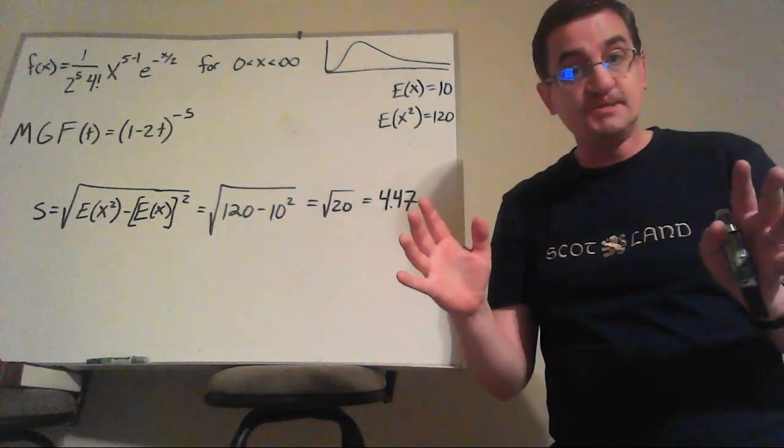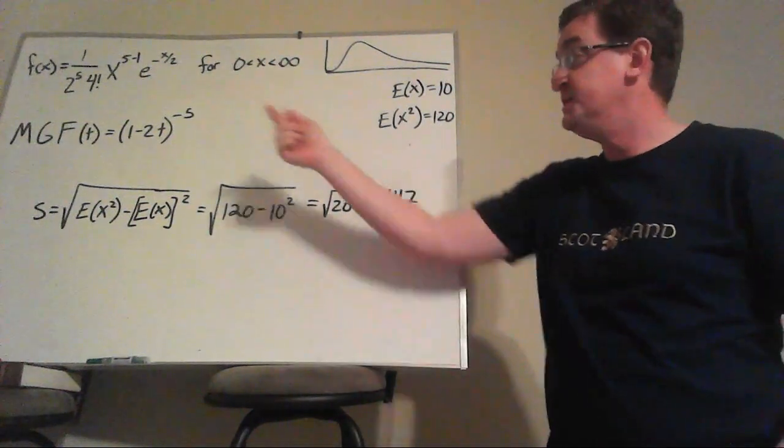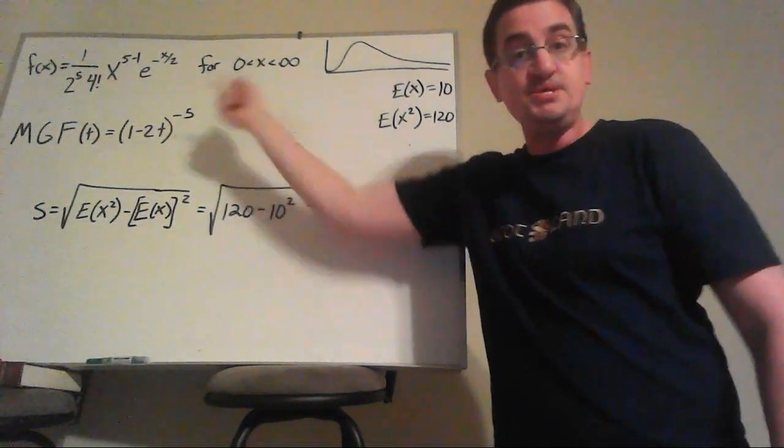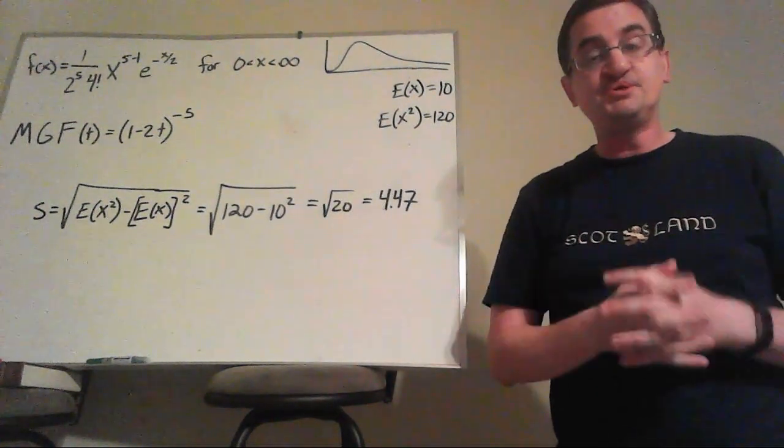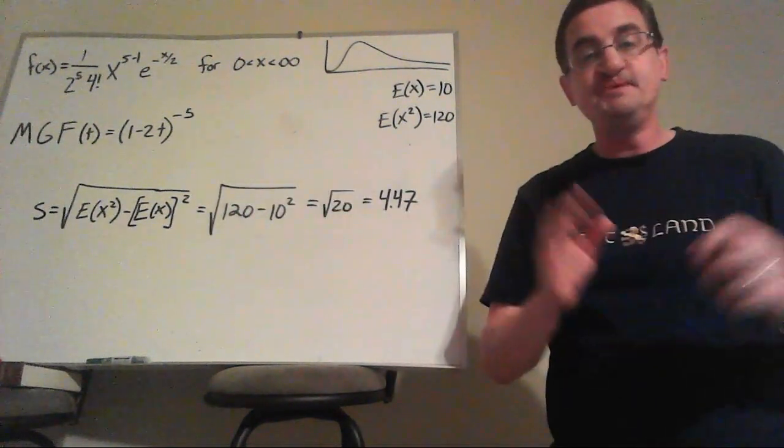And because knowing all the moments tells you everything you need to know about the probability distribution, this is one way that you could describe the gamma distribution. And you can see why I said there's higher level proofs where using the moment generating function is a big deal.